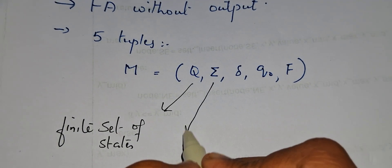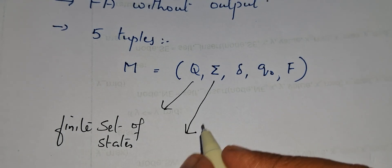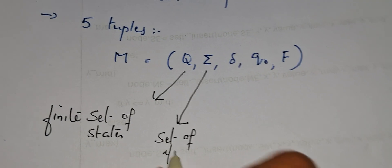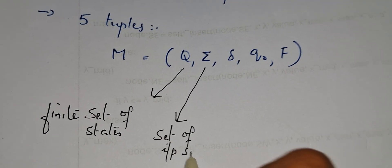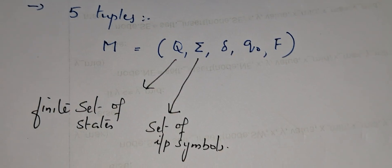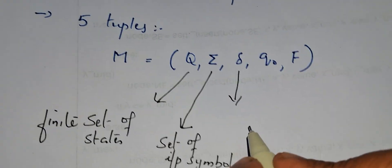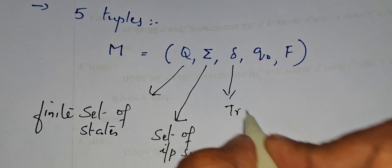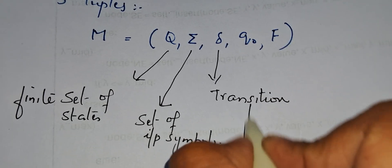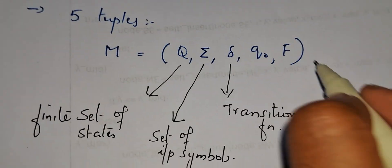Then what is sigma? Sigma means set of input symbols. Then what is del? Del is the transition function.